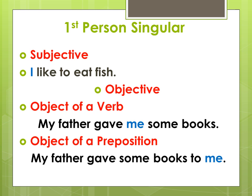The first person singular: when it comes as a subject, it is always at the beginning of the sentence in the form of 'I'. When it is an object, it changes. It can be an object of a verb — for example, 'My father gave me some books' — or an object of a preposition, as in 'My father gave some books to me'.